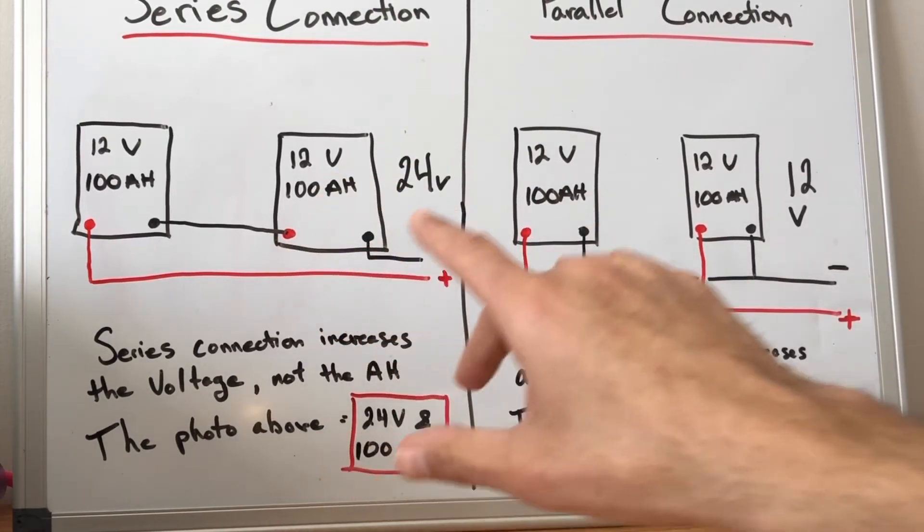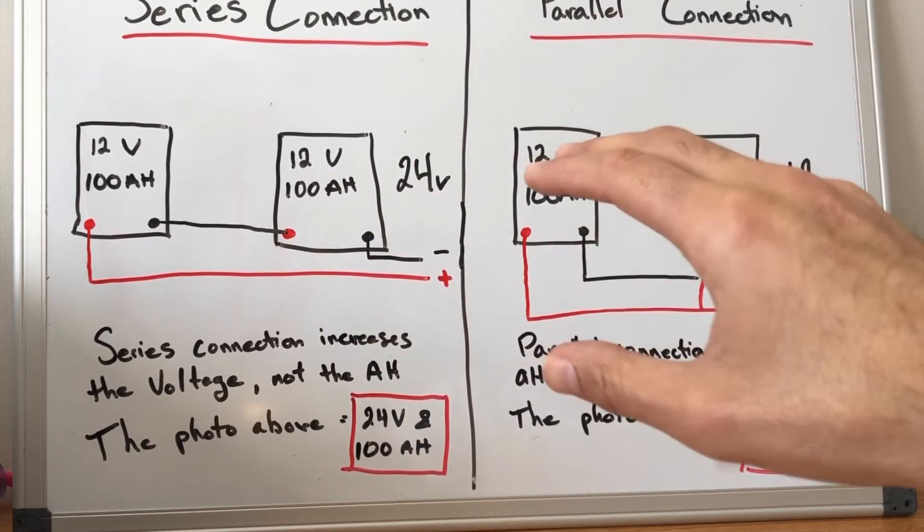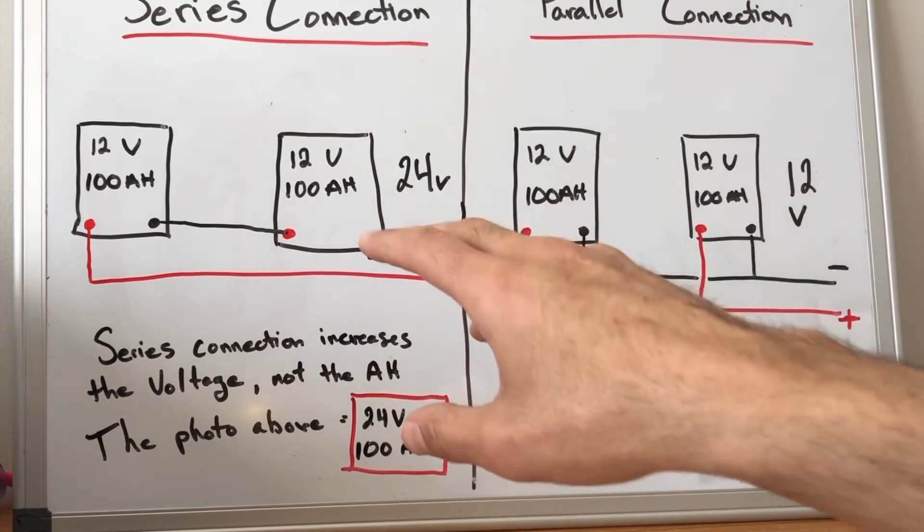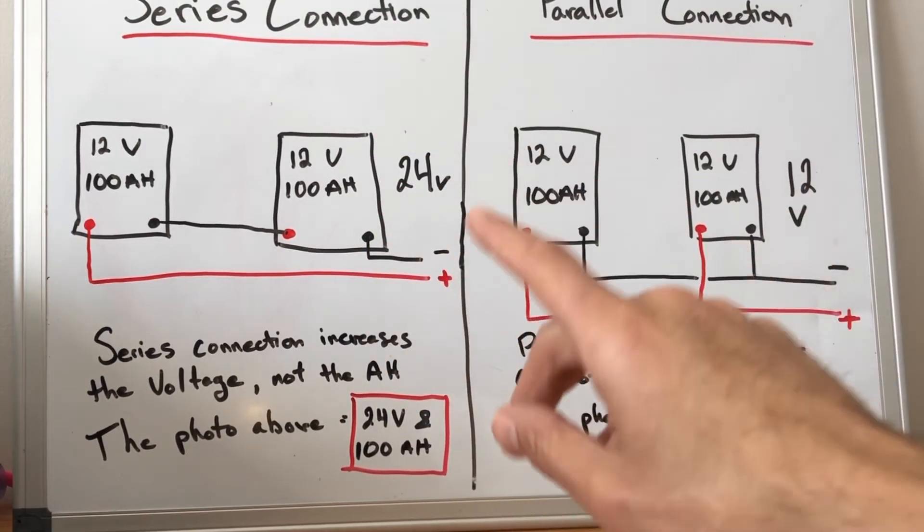So looking at this high level the overall voltage of this battery bank would be 24 volts but it would still have a hundred amp hours.